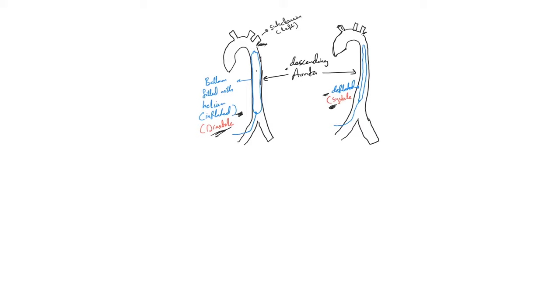Because this balloon sits in the descending aorta it's called intra-aortic balloon pump, IABP. Usually this is placed and handled completely by cardiology and usually placed through the femoral artery all the way.